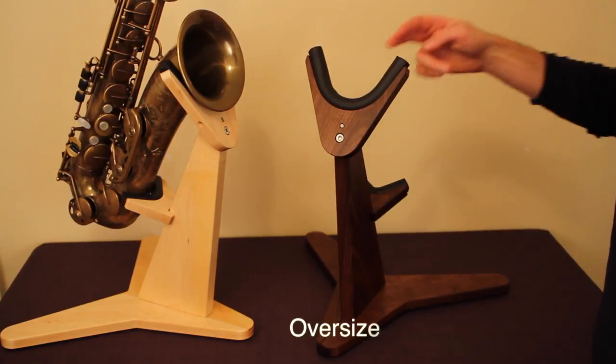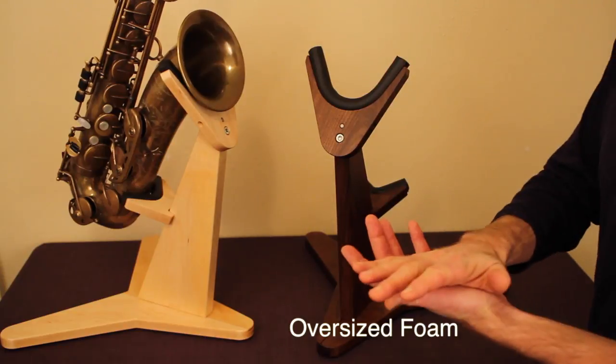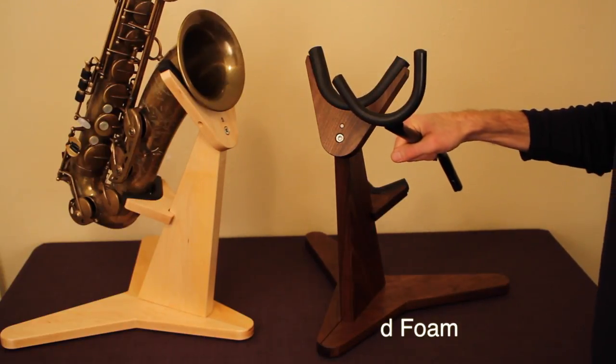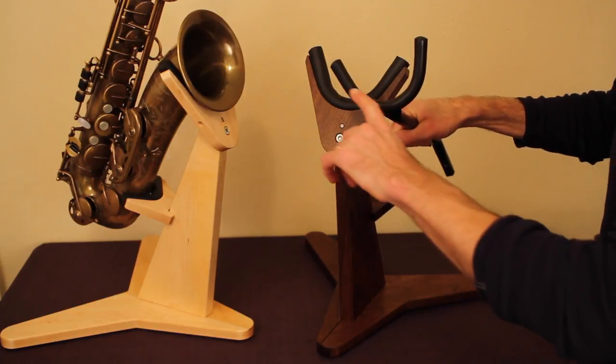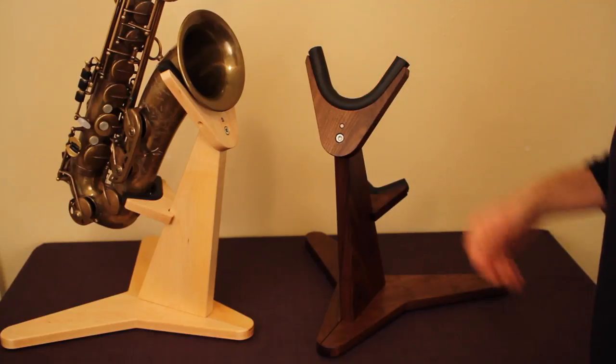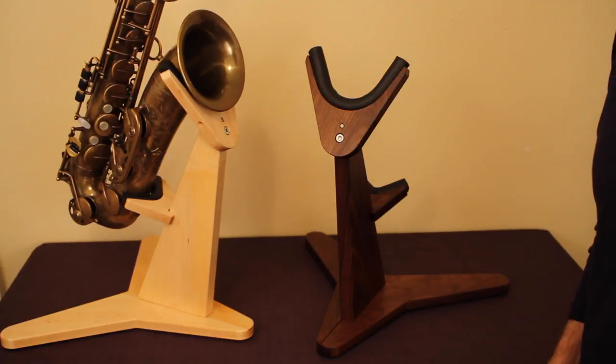The design features oversized foam for your saxophone to rest on. You'll notice that on most stands they use a thinner foam, smaller diameter, so this larger foam gets a better grip on the saxophone and it doesn't mar the finish of the saxophone.